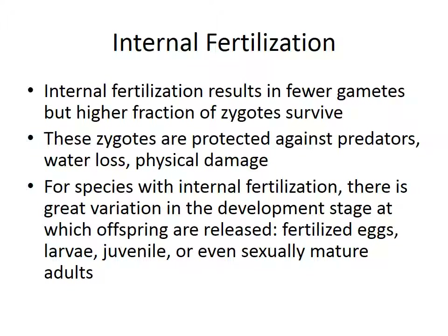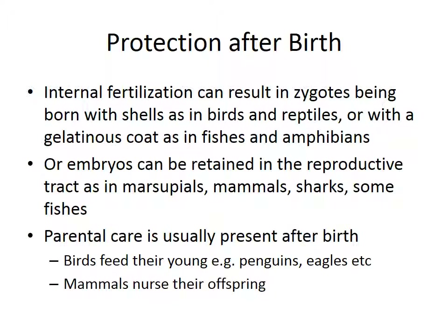For species with internal fertilization, there is great variation in the developmental stage at which offspring are released. You could release a fertilized egg right away, or release the egg after it's become a larva, or release the offspring as a juvenile — after the egg and larval stages but still needing some protection — or even keep the offspring inside until it's sexually mature and able to produce its own children before letting it go.